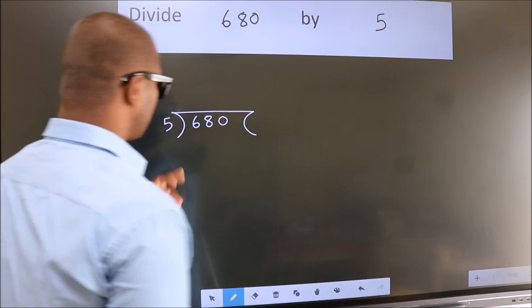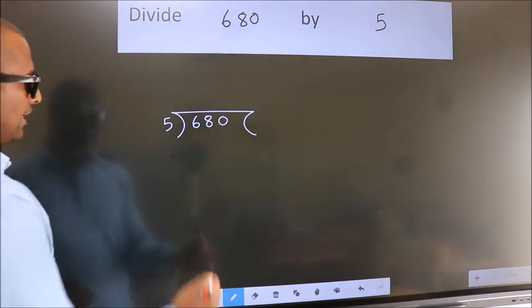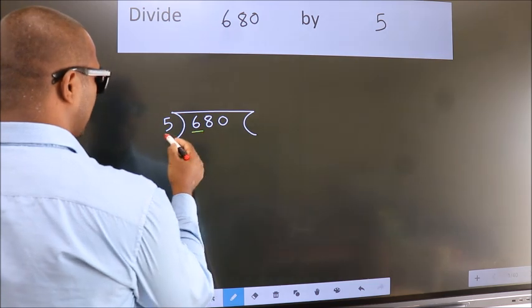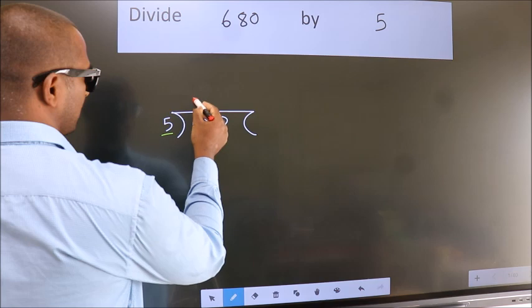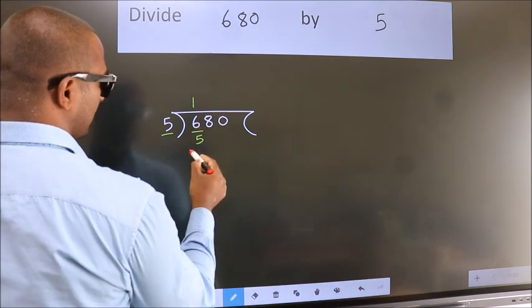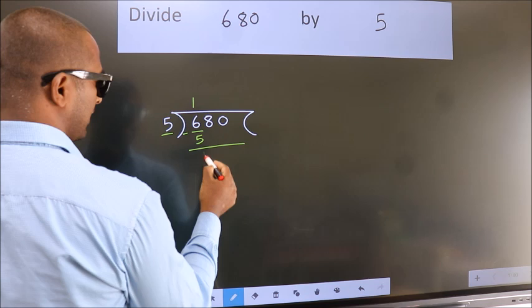This is your step 1. Next. Here we have 6. Here 5. A number close to 6 in 5 table is 5 once 5. Now we should subtract. We get 1.